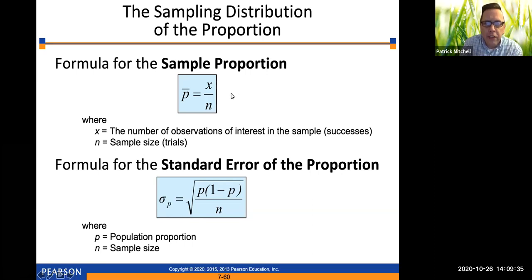So first, we have p bar, which is the sample proportion. That's x divided by n, where x is the number of observations of interest in the sample, also known as successes, and n is the sample size, which is the number of trials. So the formula for the standard error of the proportion, sigma sub p, is the square root of p times 1 minus p over n. This is going to take the place of the formula that we talked about in the last section, sigma sub x bar, which was sigma divided by the square root of n.